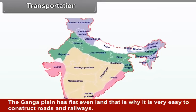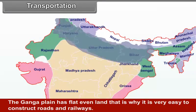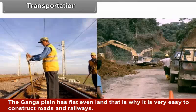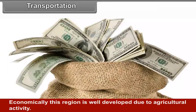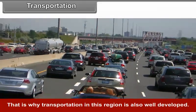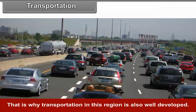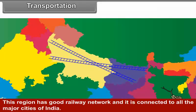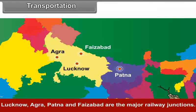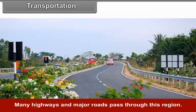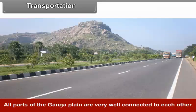Transportation. The Ganga Plain has flat, even land, making it very easy to construct roads and railways. This region is well developed economically due to agricultural activity, and transportation is also well developed. This region has a good railway network and is connected to all major cities of India. Lucknow, Agra, Patna and Faizabad are the major railway junctions. Many highways and major roads pass through this region. All major cities have the facility of air transportation.